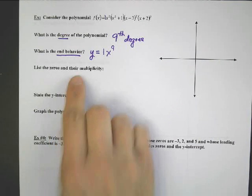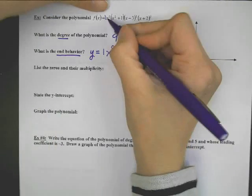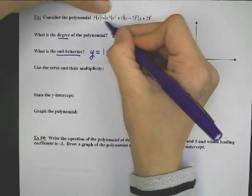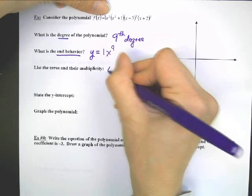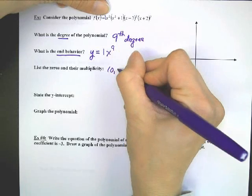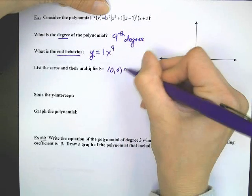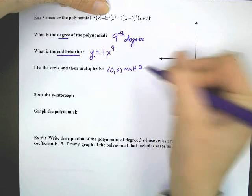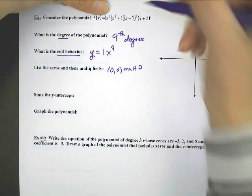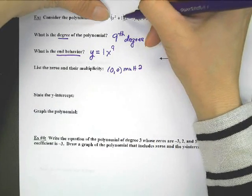Now end behavior: you say y equals, then you look at the leading coefficient, which is 1. And if I were to multiply that out, I would get x to the 9th. So degree and end behavior are going to be very much related — you just have to know how to write it. List the zeros and their multiplicity. When you have an x out here, that's going to make 0, 0. And the multiplicity there? Multiplicity two times.